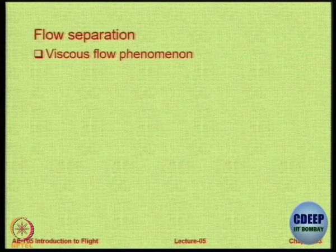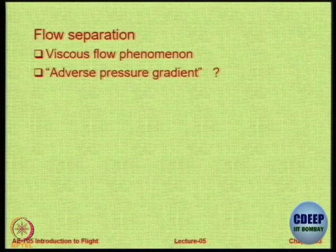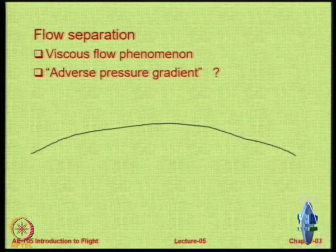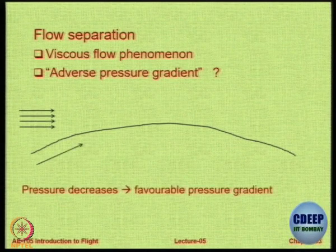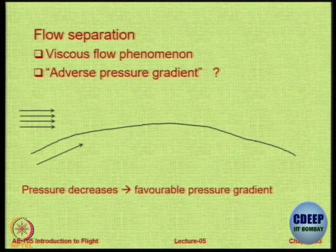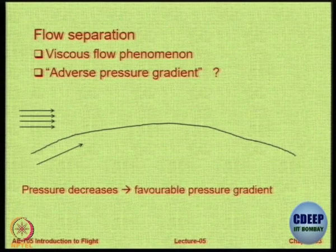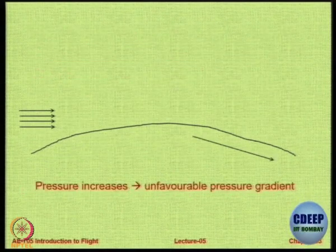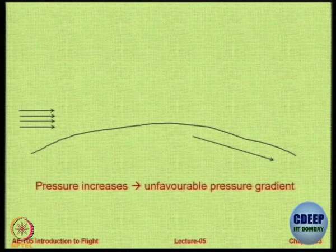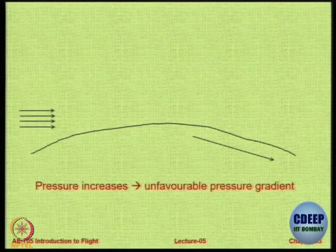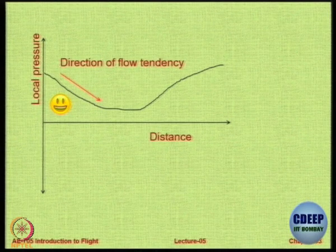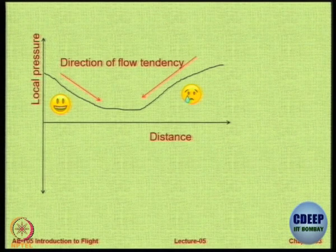The effect of viscous flow is flow separation — it is a viscous flow phenomenon. If your flow is inviscid, you will never get separation. There is a concept of adverse pressure gradient which causes or triggers separation. If you have a body with flow over it, the pressure decreases as you go ahead — a favorable gradient that helps the flow. But at the trailing part the pressure increases with length, creating a back pressure opposing the flow, creating a chance of separation.